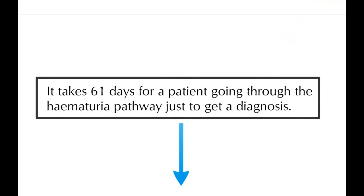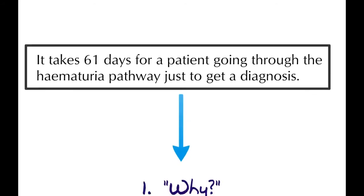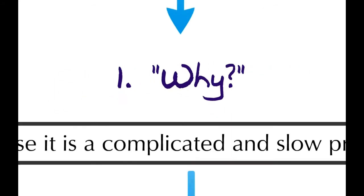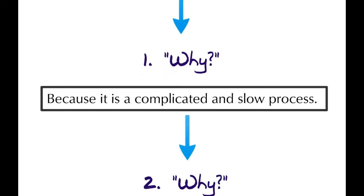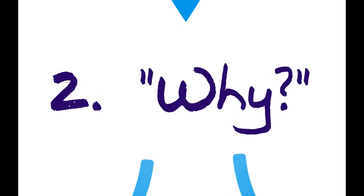Let's use the example that Harold and Angela are going through. It takes 61 days for a patient going through the haematuria pathway just to get a diagnosis. Why is that the case? Well, in this case, it's because it's a complicated and slow process.